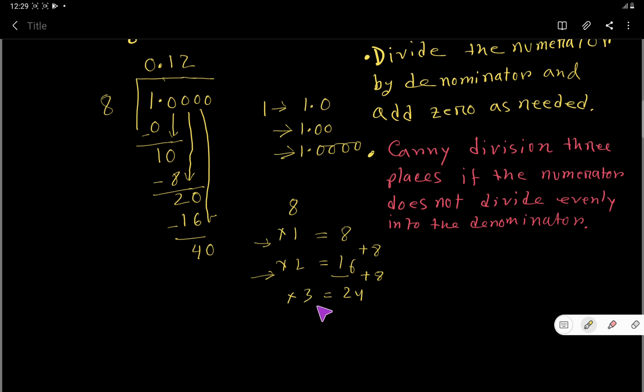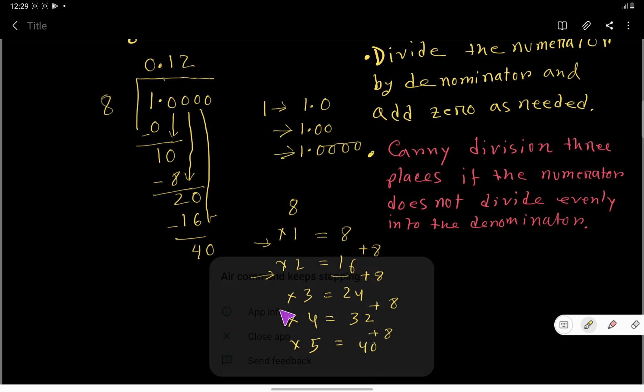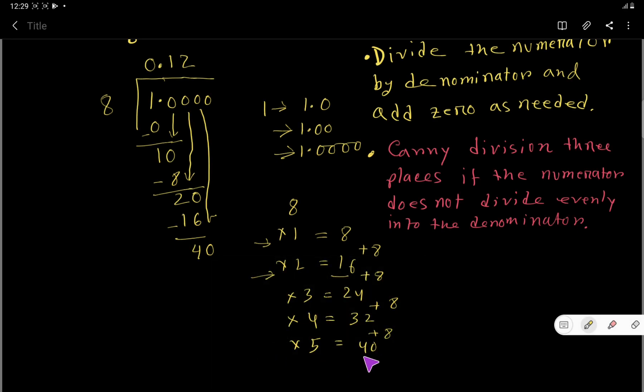So what is happening? 8 goes into 40 how many times? Let us get help from the multiplication table. 8 times 4 equals 32. That is, you add 8 with 24, then you get 32. Then 5, you add 8—that is 40. So 8 goes into 40 five times.